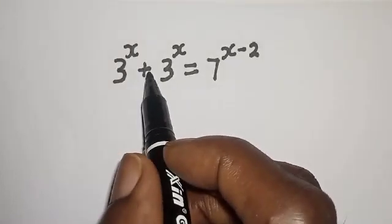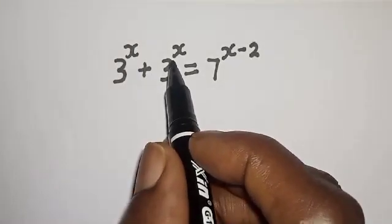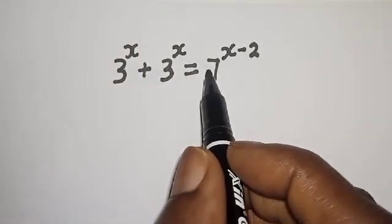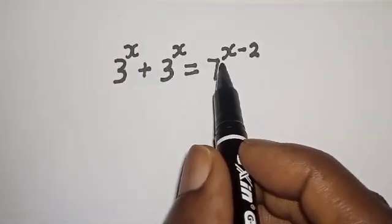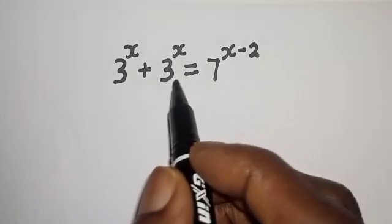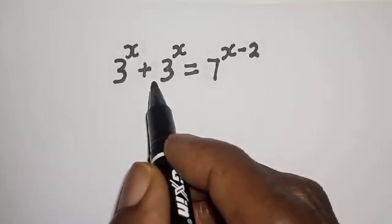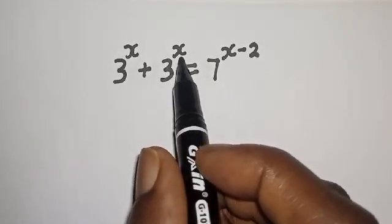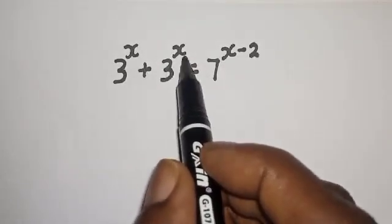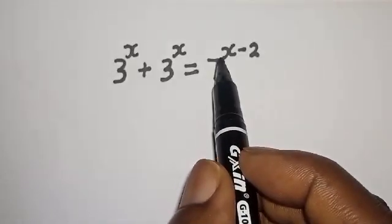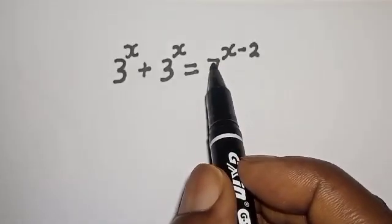3 raised to power s plus 3 raised to power s is equal to 7 raised to power s minus 2. Hi everyone, welcome to my class. In this class, I want to find the value of s from this nice equation.